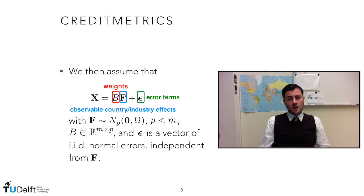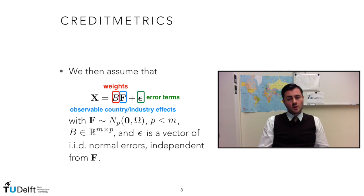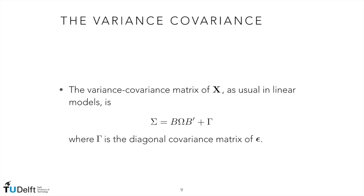We have a vector epsilon that contains error terms that are IID — identically and independently distributed according to a normal distribution. Using the assumptions about the independence of f and epsilon, the variance-covariance matrix of x is given by the quadratic form in omega, the variance-covariance matrix of the factors in f, and gamma, the diagonal variance-covariance matrix of the error vector epsilon. Thanks to the assumption that the marginals are standard normals, the covariance matrix is also a correlation matrix.